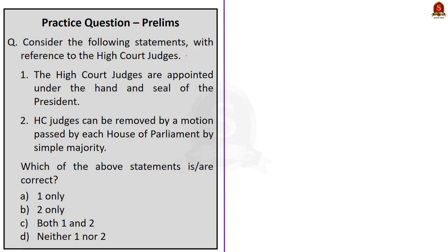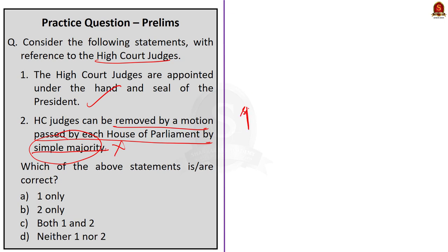For the third question on high court judges: Statement 1 says high court judges are appointed under the hand and seal of the President — this is true. Statement 2 says high court judges can be removed by a motion passed by each house of the Parliament by a simple majority — this is incorrect, because a special majority is required. Special majority means a majority of total membership of the House and a majority of not less than two-thirds of the members present and voting. Therefore, the correct answer is option A: one only.